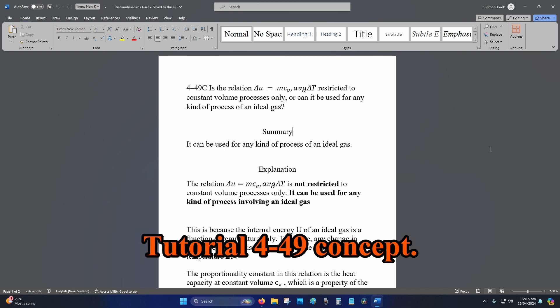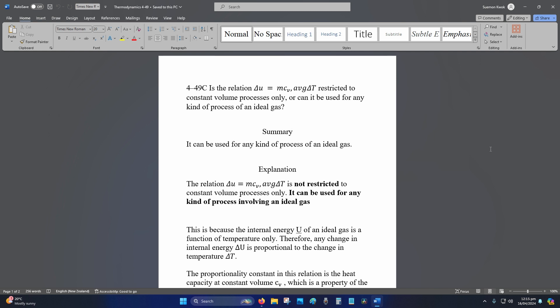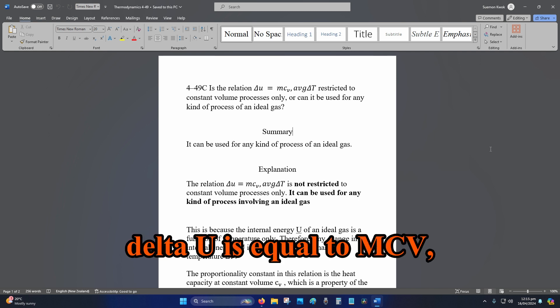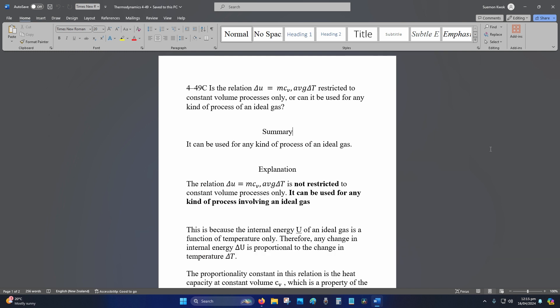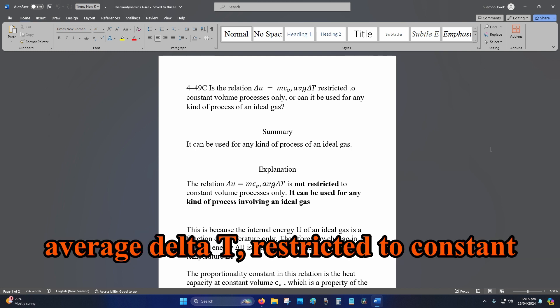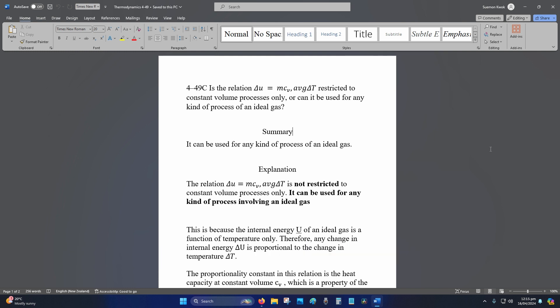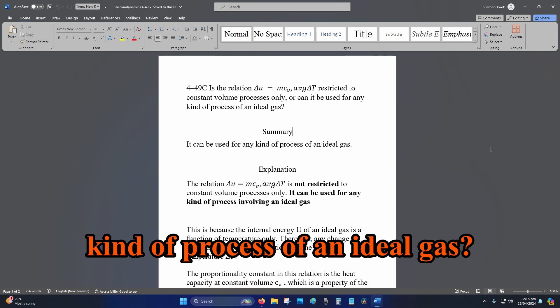Hey internet, welcome to Thermodynamics Tutorial 4-49. The concept is: is the relation Δu = mc_v,avg ΔT restricted to constant volume processes only, or can it be used for any kind of process of an ideal gas?